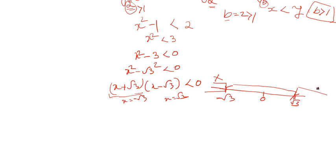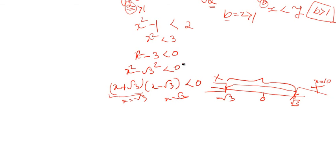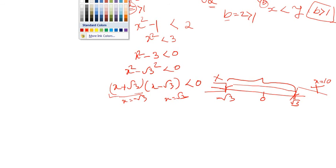Taking a value much less than -√3, the inequality does not hold. Taking a value greater than √3, such as x = √10, both terms are positive, so their product is not less than 0 — that range also fails. But substituting x = 0 (between -√3 and +√3), you get a negative product, so the inequality holds for any number between -√3 and +√3.